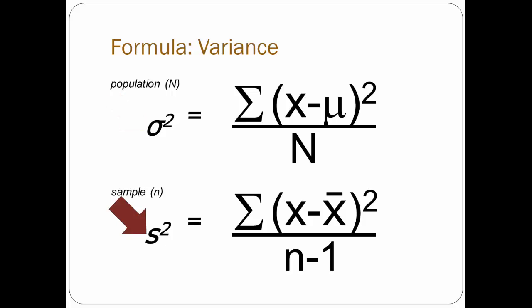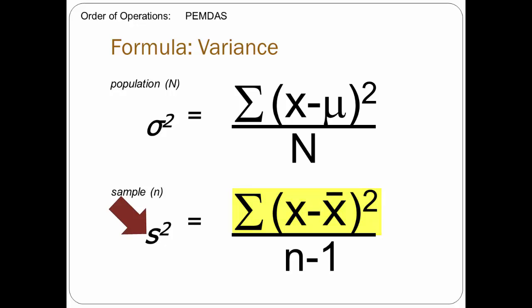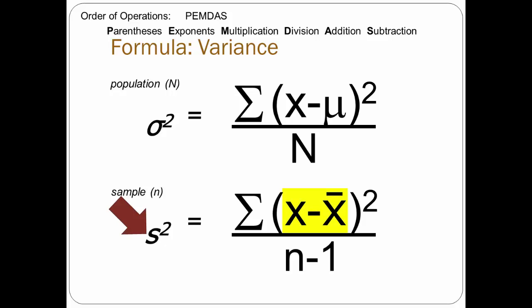Let's focus on the formula for calculating variance for a sample — this bottom one — as you probably recognize the x-bar as the symbol for the mean. We'll start with the numerator. If you recall the order of operations in a formula, I remember it as PEMDAS, or 'please excuse my dear Aunt Sally' — parentheses, exponents, multiplication, division, addition, and subtraction — you'll start by calculating the stuff in parentheses.